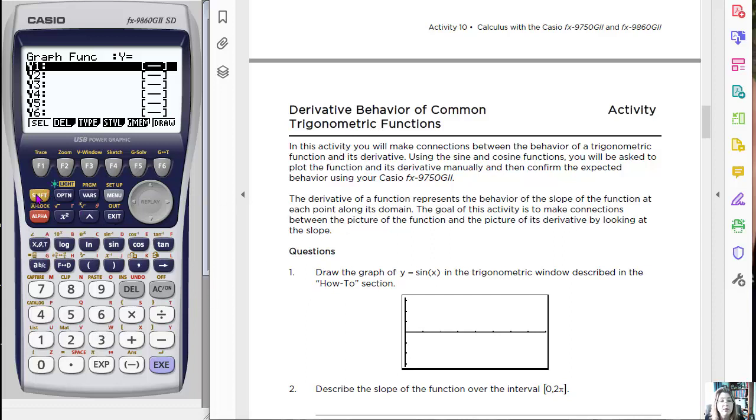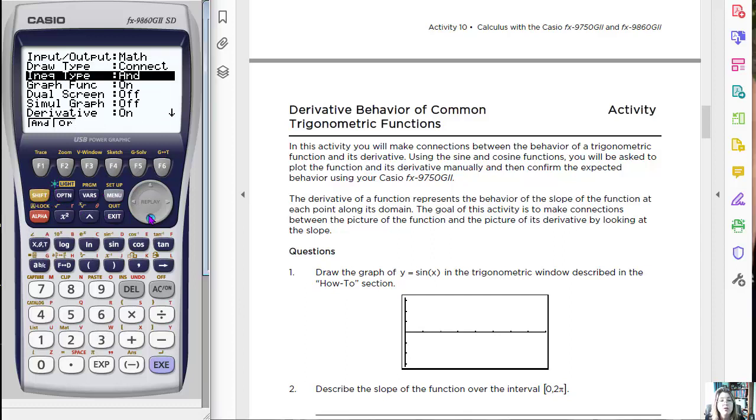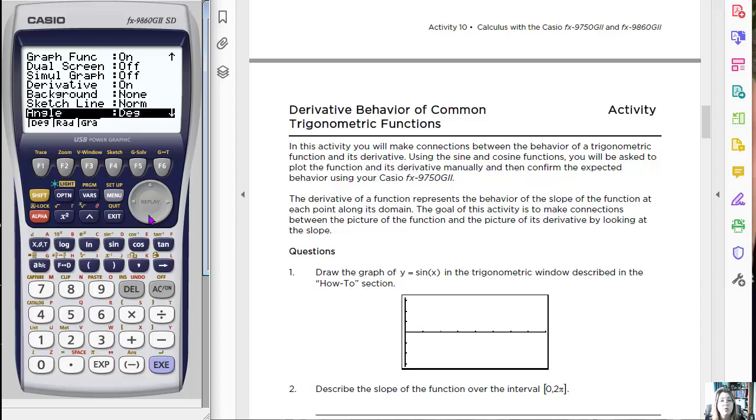What I haven't done since I'm working with trig functions is I haven't made sure that my angle is done in radians. So we're going to go back to that menu setup. Remember I'm in my graph menu, shift, setup. I'm going to arrow down until I see angle and see what it's at. Right now it's at degree, so I want to make sure I set it to radians. I'm going to hit execute, that takes me back.